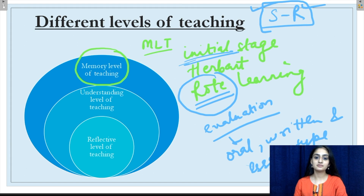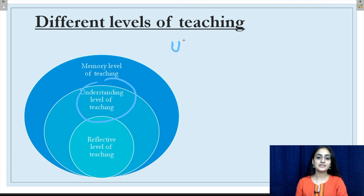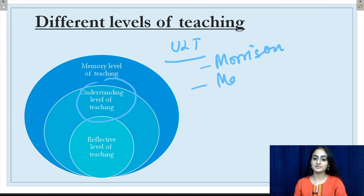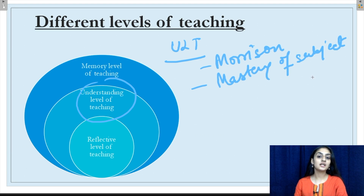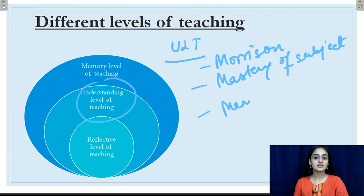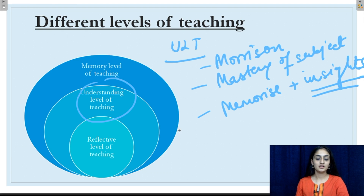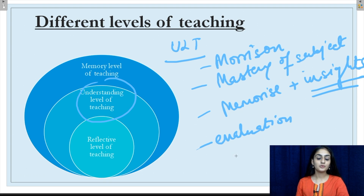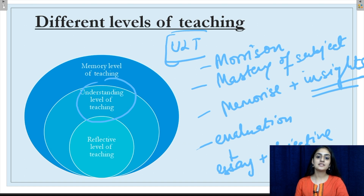Moving on to the understanding level of teaching, or ULT. This was proposed by Morrison and it focuses on the mastery of a subject. It makes the student understand concepts, principles, generalizations as well as facts. It not only makes the student memorize things but also provides an insight into concepts which goes beyond memorizing facts. It also provides an opportunity for students to develop intellectual behavior, and its evaluation system includes both essay as well as objective type questions.